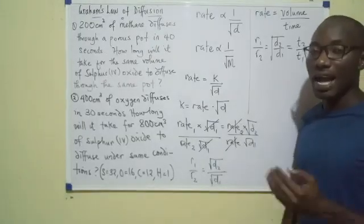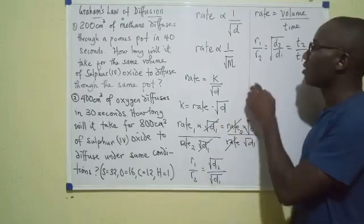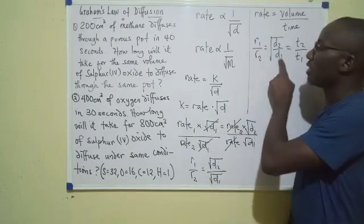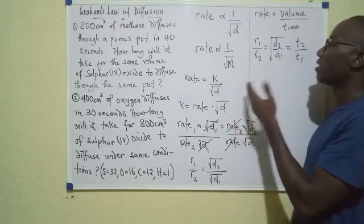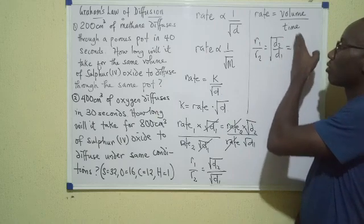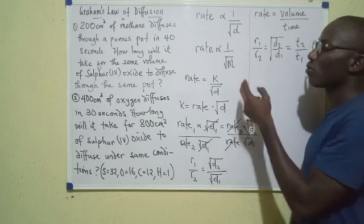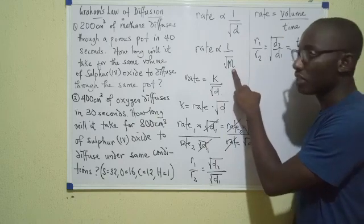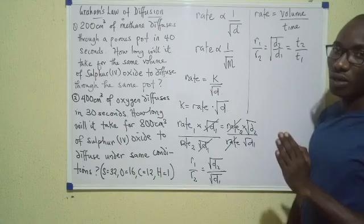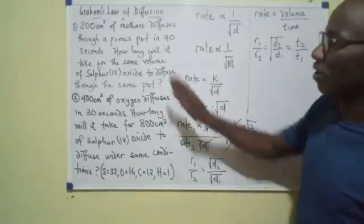So it may be that in some instances you need to use r1 over r2 equals root d2 over d1. In some other instances, what you use is root d2 over d1 equals t2 over t1. And of course, when you are given molecular weight, you don't need to start calculating density first. You are free to use the molecular weight just like that.